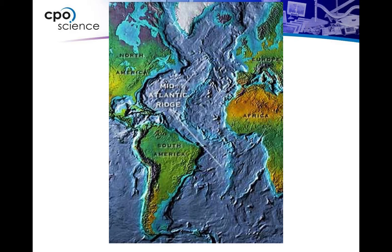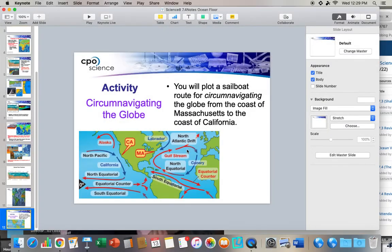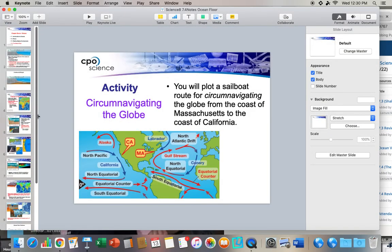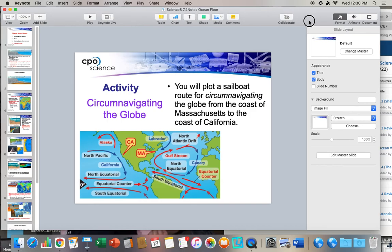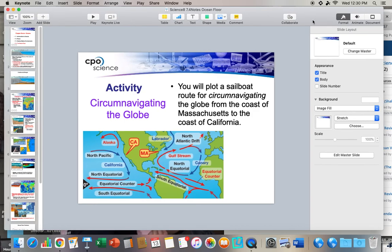Here's another bathymetric map showing the Mid-Atlantic Ridge running down the ocean. There are lots of cool ocean features. If this were a life science class, we could go into the animals that live in the ocean, but that's for another day.